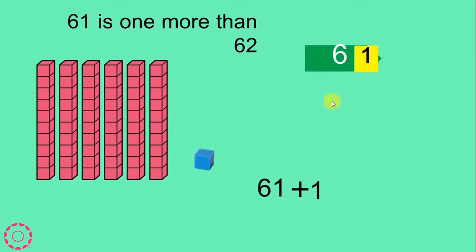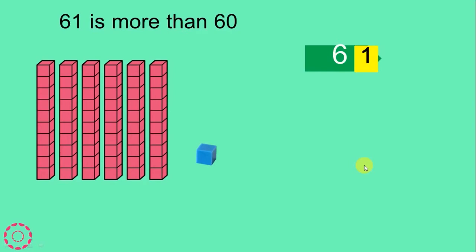61 plus 1: 1 plus 1 equals 2, 6 plus 0 equals 6. We have 62. 62 equals 62. So 61 is 1 less than 62, and 61 is 1 more than 60.